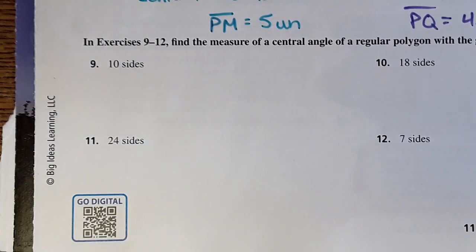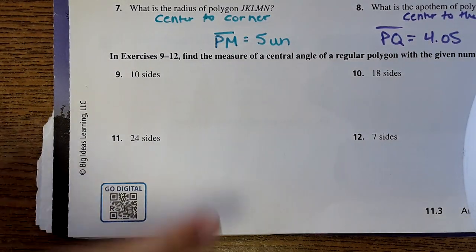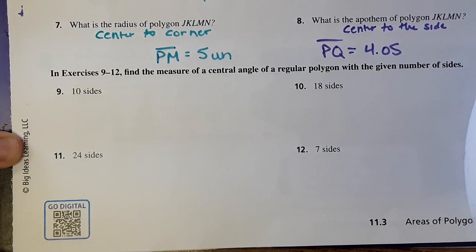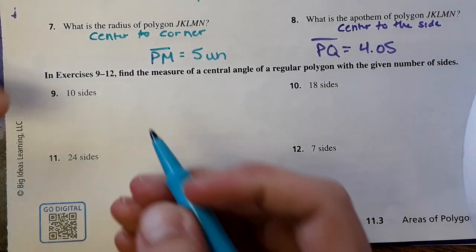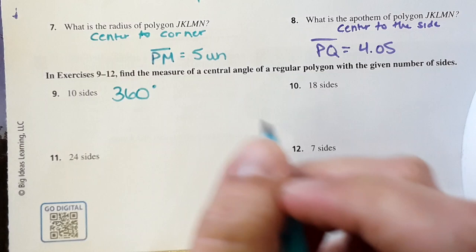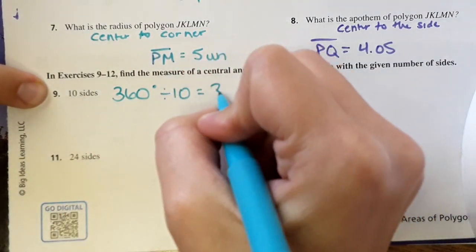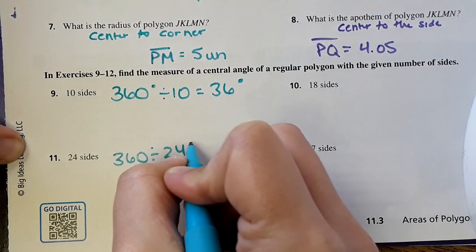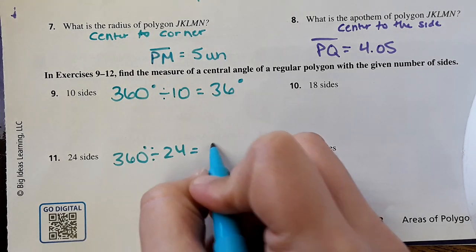All of this is building toward what we're doing on the next page. Here it says find the measure of a central angle of a regular polygon with a given number of sides. To find the central angle, all you have to do is take 360 degrees — which would be all the way around the polygon — and divide by the number of sides. So that would be 36 degrees, and this would be 15 degrees.